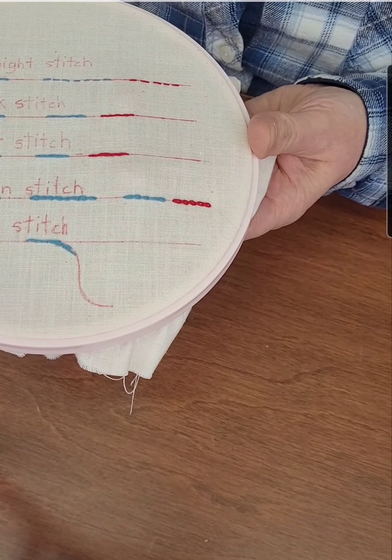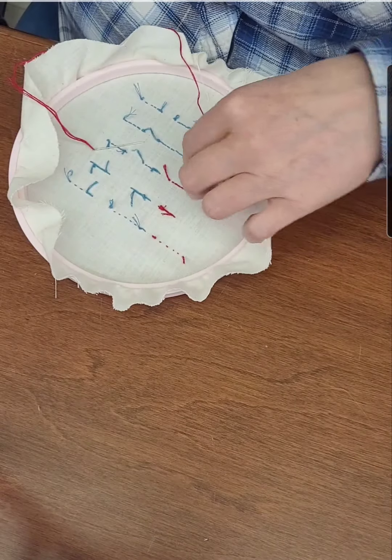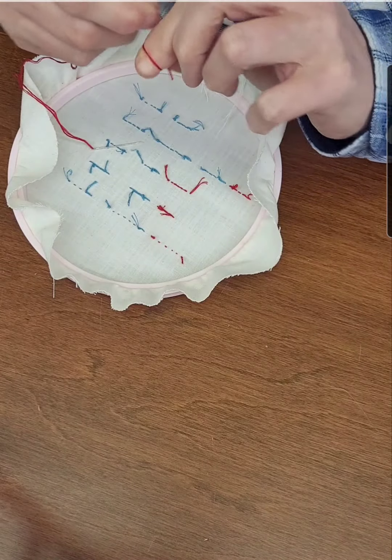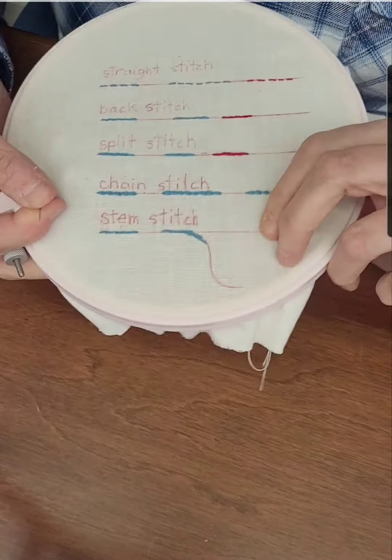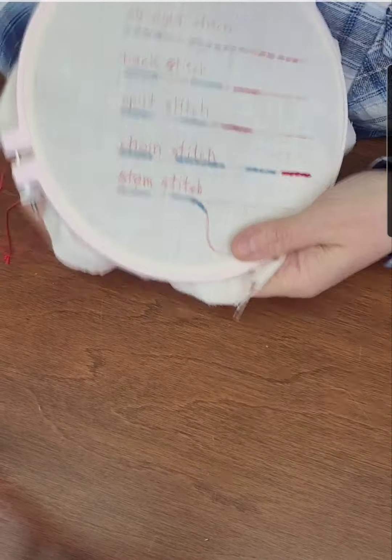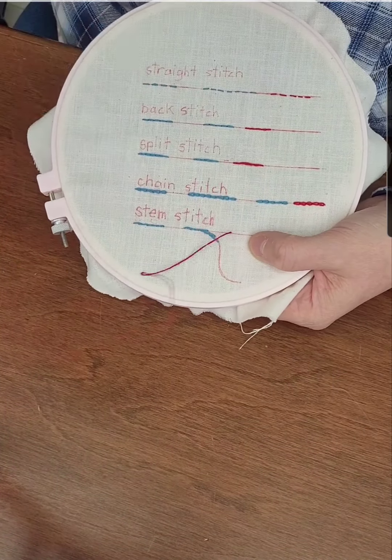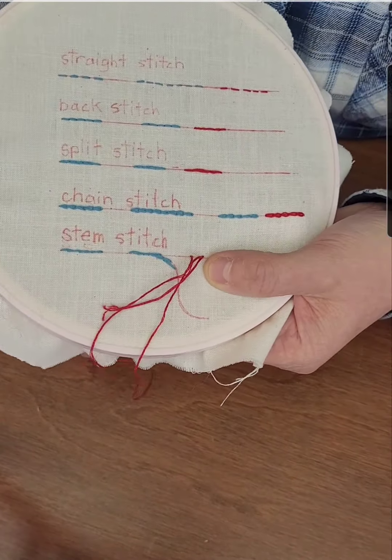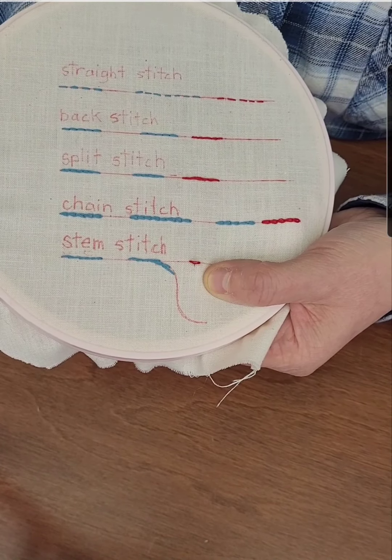The last stitch is called the stem stitch and like its name it is used for doing flower stems. And you can use it on curves, on letters. So here we go. So you create your first stitch, so it might be a little bit bigger than the stitches above because you're going to come in at the bottom of the stitch in the center and then back down.